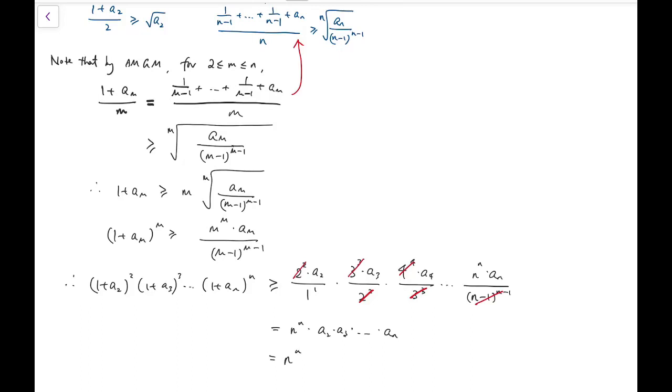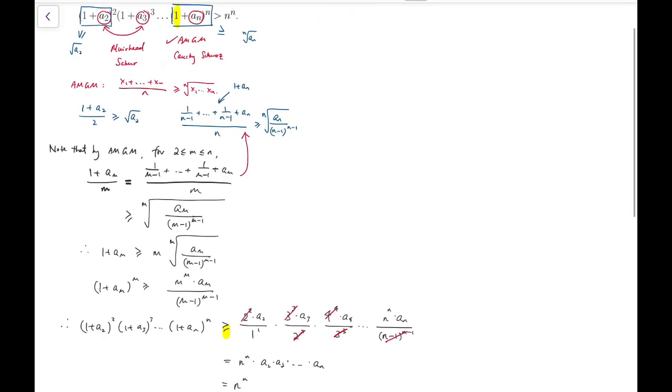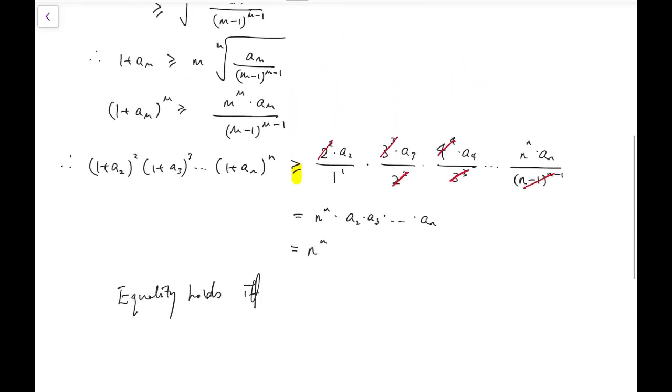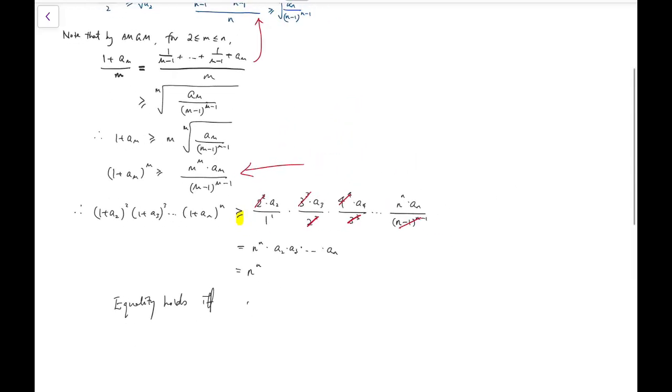So the last question is, when does equality hold? Because we have this symbol, greater than or equal to, not greater than. And we are still slightly away, a little bit away from the exact statement, which is that we are asked to prove the strict inequality. We are not supposed to just show that it's greater than or equal to. So now we are going to handle the case when equality holds. Equality holds if and only if all these inequalities are equal.